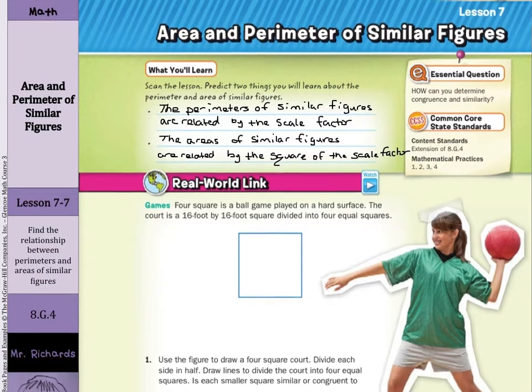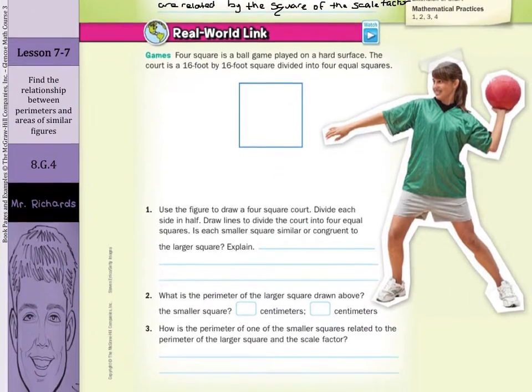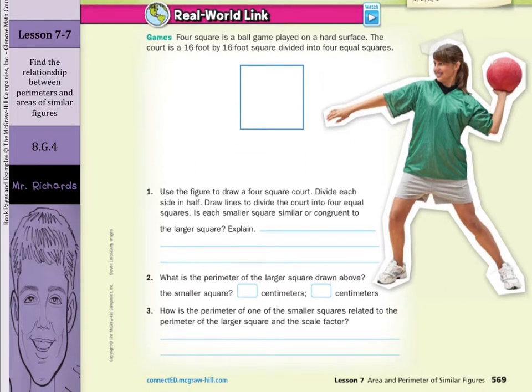Now for our real-world link, four square is a ball game played on a hard surface. The court is a 16 foot by 16 foot square divided into four equal squares. Question one: Use the figure to draw a four square court. Divide each side in half. Draw lines to divide the court into four equal squares. So let's do that now. We'll go in half right about here, and then we'll come down right about here and have pretty close to four equal squares.